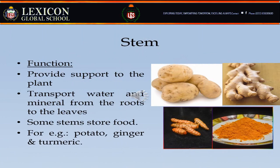The stem is the upper part of the plant that bears branches, leaves, flowers, and fruit. The functions of the stem are: it provides support to the plant, and transports water and minerals from the roots to the leaves. Some stems also store food — for example, potato, ginger, and turmeric.